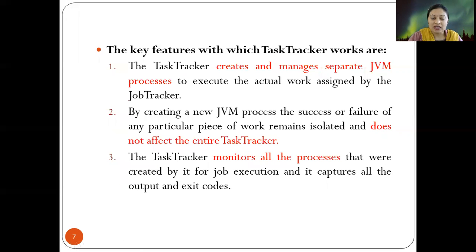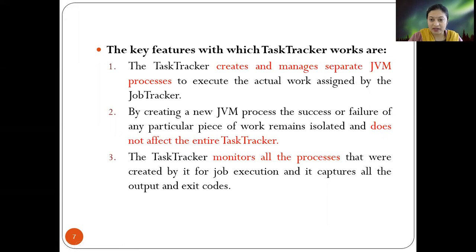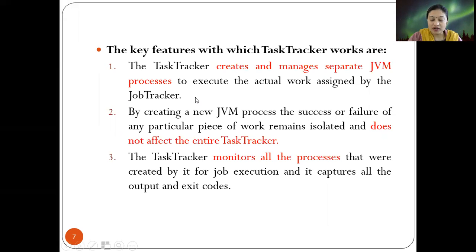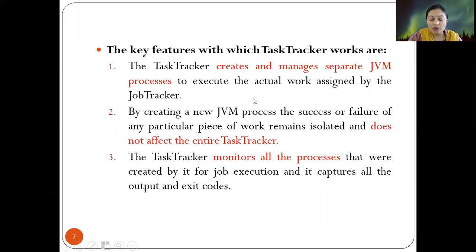There are key features of the task tracker. It creates and manages separate JVM processes to execute the actual work assigned by the job tracker — there is one separate process for every task. By creating a new JVM process, the success or failure of a particular piece of work remains isolated and does not affect the entire task tracker. This isolation is an important aspect of the task tracker's separate JVM design.